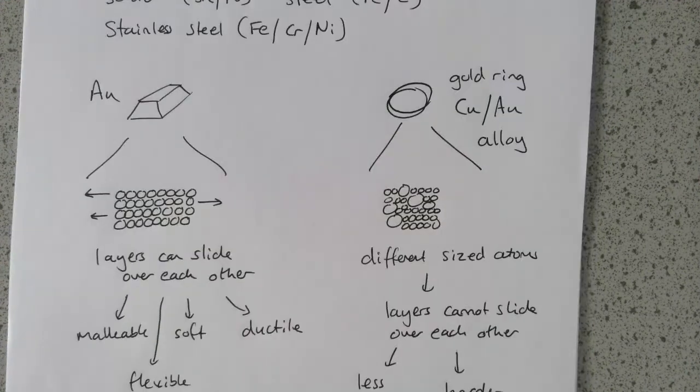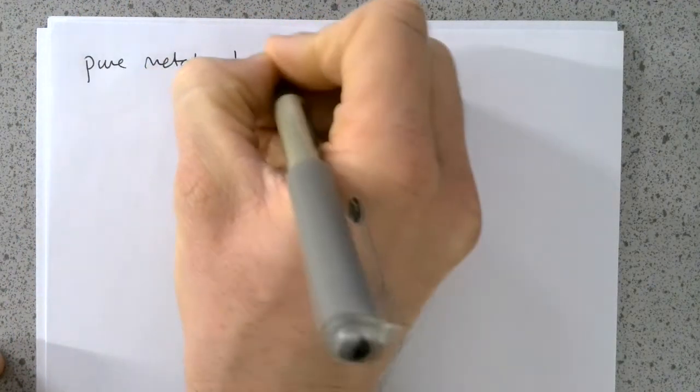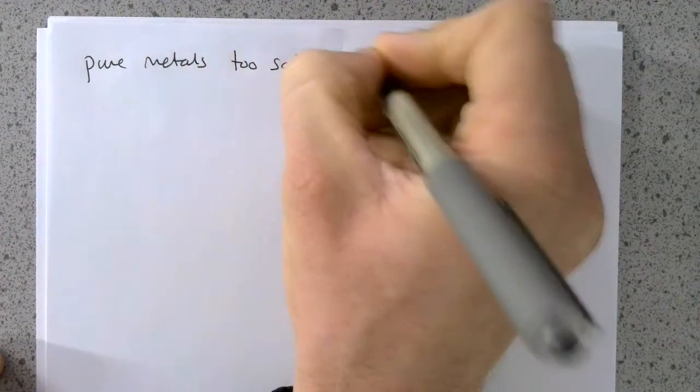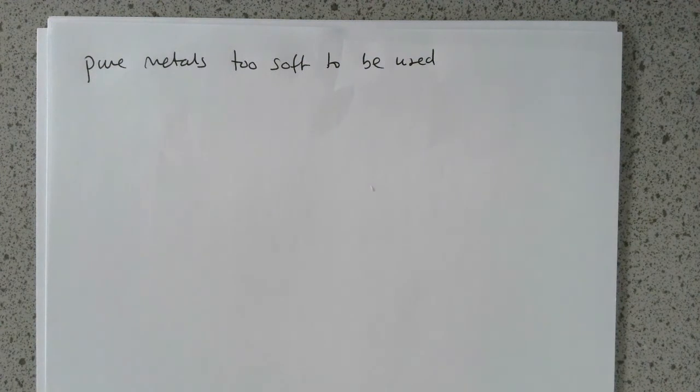Just to finish on the point, often pure metals are too soft to be used. Almost all metals that we use are alloys. And we can change the composition or the things that make up the alloy in order for us to be able to have different properties.